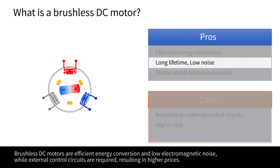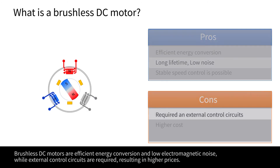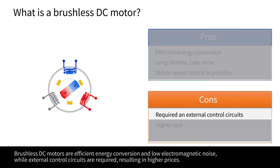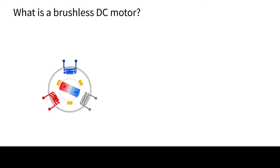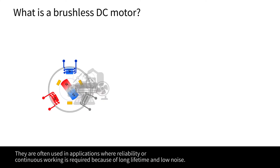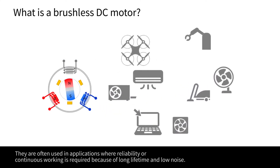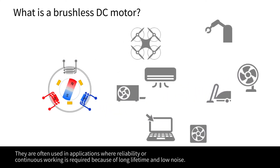Brushless DC motors offer efficient energy conversion and low electromagnetic noise, while external control circuits are required, resulting in higher prices. They are often used in applications where reliability or continuous working is required, because of their long lifetime and low noise.